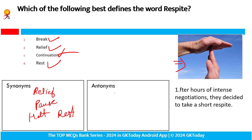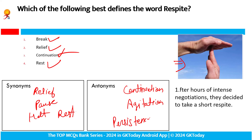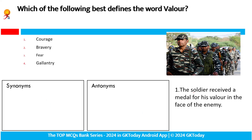Antonym: continuation, agitation, persistence, run up, continue. After hours of intense negotiation, they decided to take a short respite. So after intense negotiation for hours, they finally decided to take a short respite — fine.